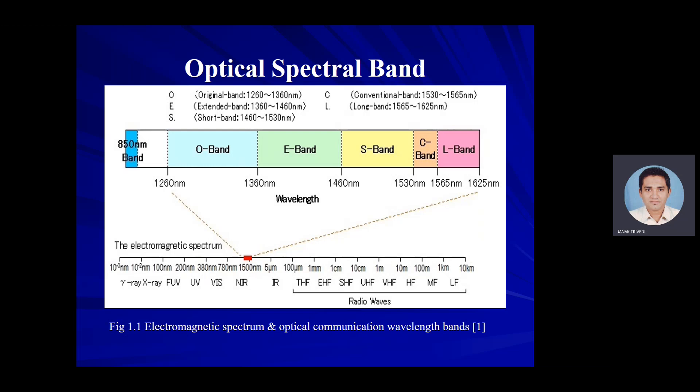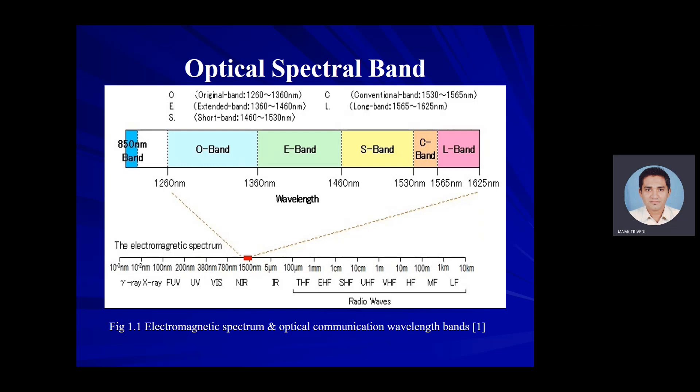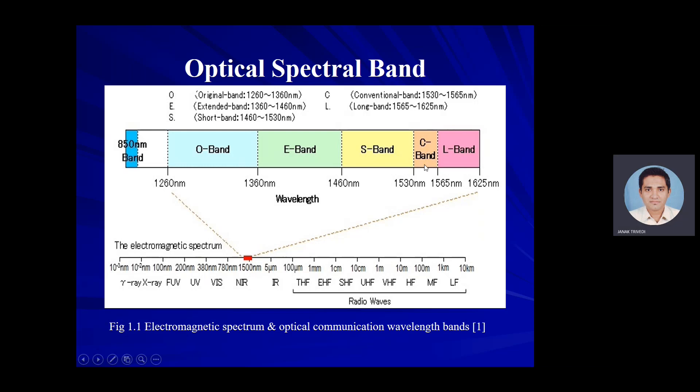Today, optical fiber shows its lowest loss in the C band — the conventional band, spanning approximately 1530 to 1565 nanometer — and thus is commonly used in many metro, long haul, ultra long haul, and submarine optical communication systems, combined with wavelength division multiplexing and EDFA technology.